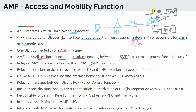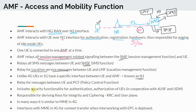AMF also handles relay of location service messages between the UE and the LMF — the Location Management Function — which was briefly mentioned in the architecture. It is responsible for querying all location information for the UE. Unlike 4G, in 5G there is a specific interface between the UE and AMF called N1. In 4G, there was no specific interface between the UE and the MME — just the NAS protocol — but in 5G we have the dedicated N1 interface.